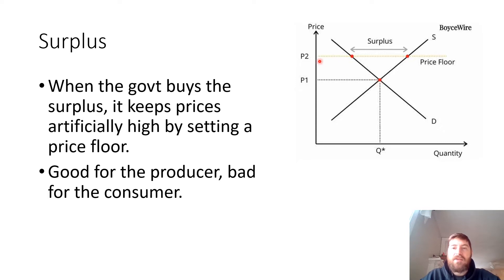A price floor is where prices cannot go below a certain level because the government is buying that surplus, artificially reducing supply. Anything north of the equilibrium point on the graph is a surplus. So if the government buys a certain amount, that sets a price floor where prices cannot go lower than that and still make a profit — great for the producer, bad for the consumer.